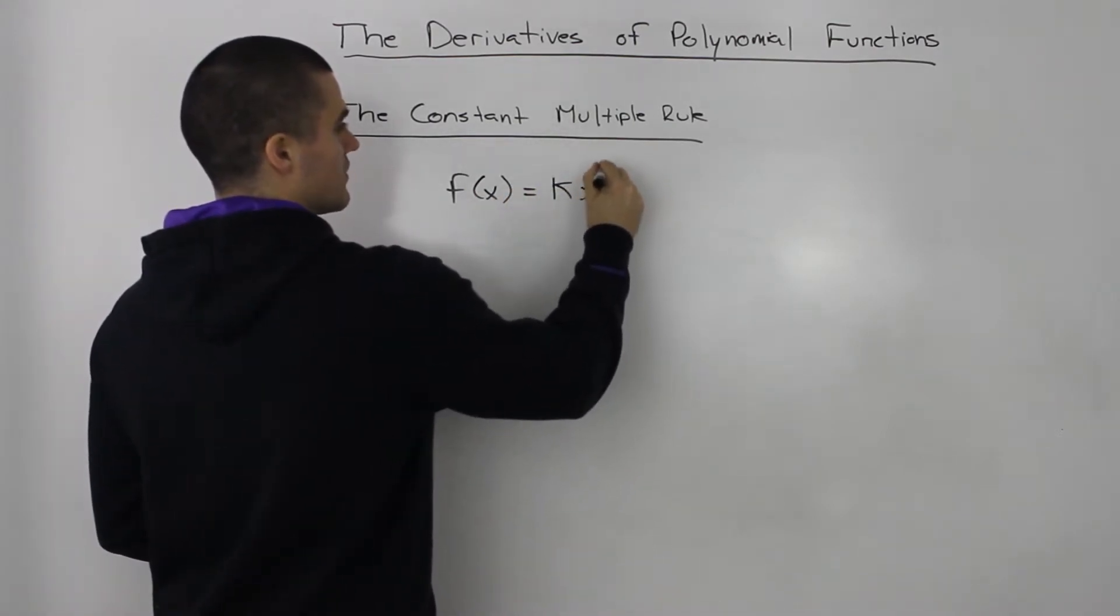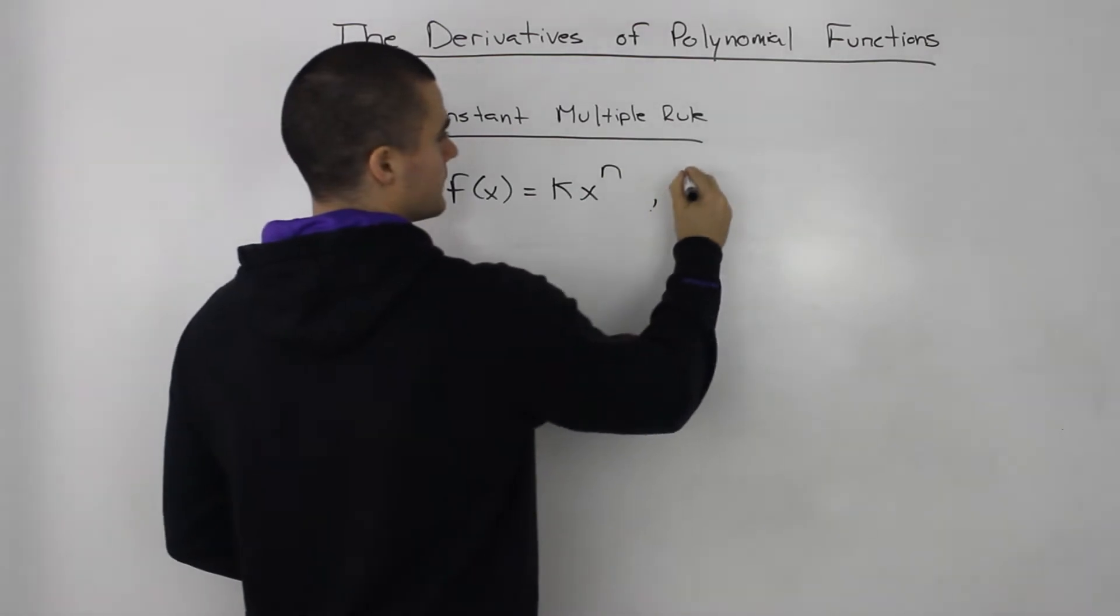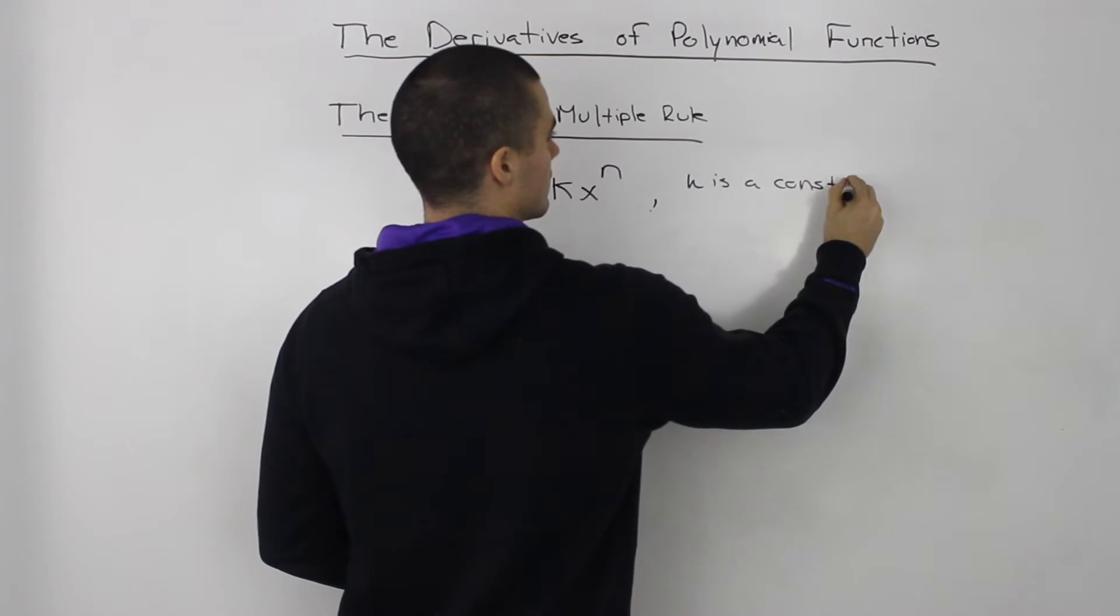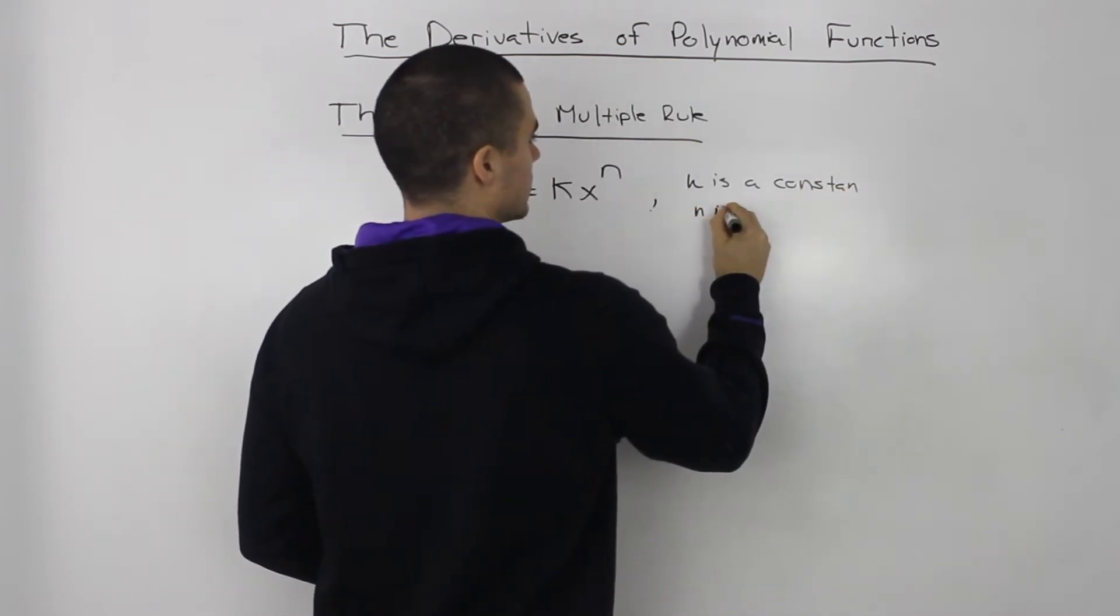that's in the form of this, so k is a constant and n is a real number.